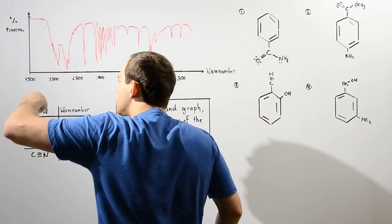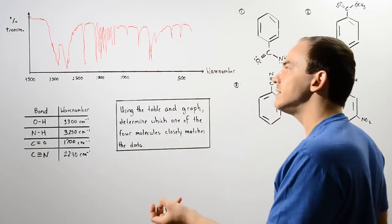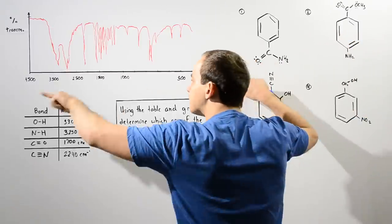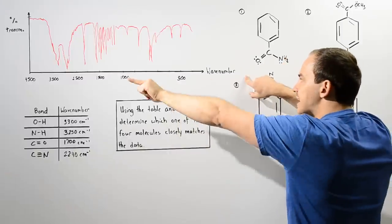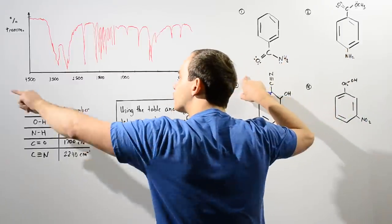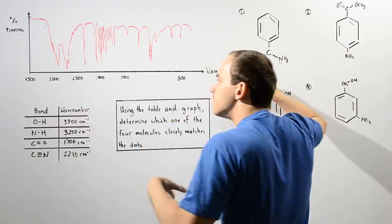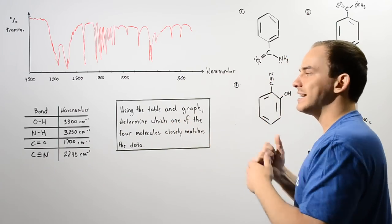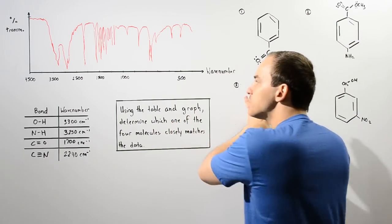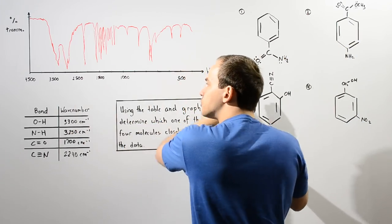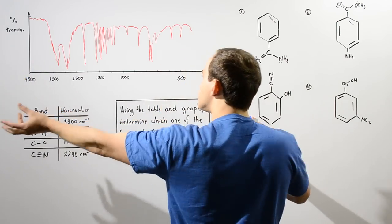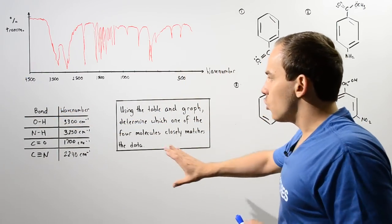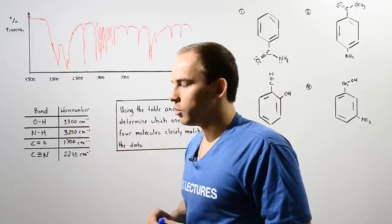The lower we go, the more is absorbed and the less is transmitted. As the wave number increases going along the x-axis, the frequency increases and the energy of that oscillating chemical bond increases. So the bonds located to the left are the stronger bonds, and the bonds located to the right are the weaker bonds. We have the following given table.